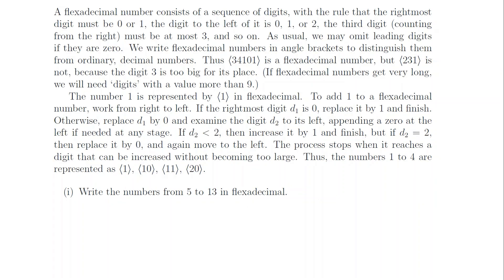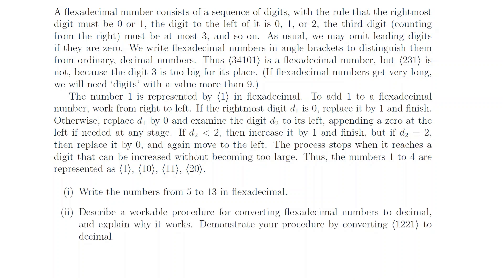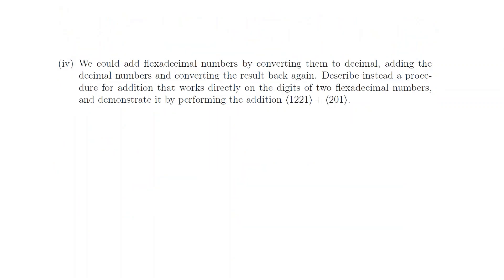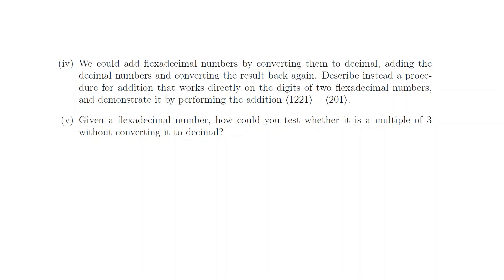Question 6, Part 1. Following the rules, the next flexodecimal numbers are 21, 100, 101, 110, 111, 120, 121, 200, and then 201. Part 2. Thinking about when we carry over to a new digit, we see that the place value of the kth digit is k factorial. So multiply each digit by the corresponding factorial and sum them up to find the value in decimal. Part 3. To convert a number to flexodecimal, find the biggest factorial smaller than the target number. The quotient gives the first digit, then continue through smaller factorials. For example, 255 turns out to be 20211. Part 4. Add the digits together starting from the right, and if the digit in the kth place is too big, subtract k plus 1 and carry 1 over to the next digit up.